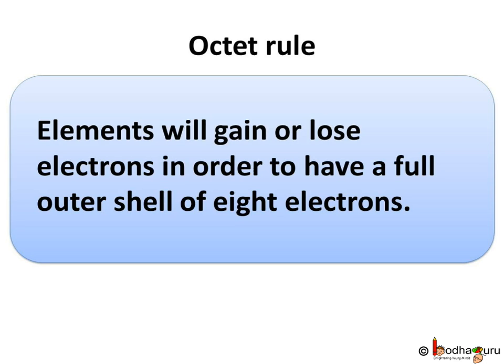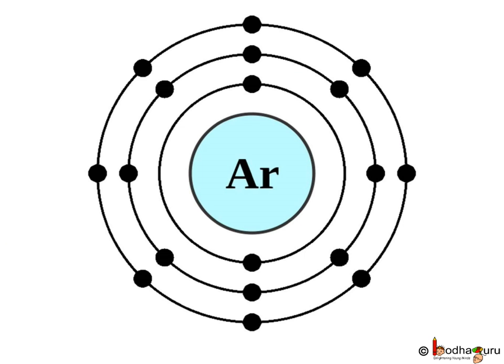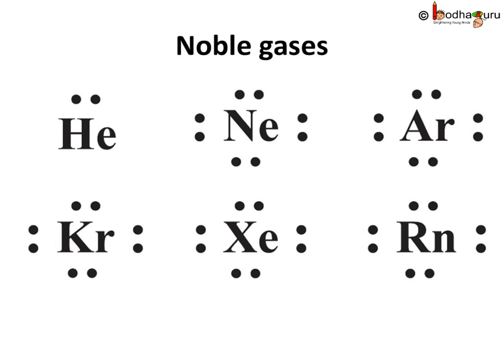Hello everyone. We know that elements generally try to achieve 8 valence electrons as stated in the octet rule. More precisely, elements try to achieve the electron configuration of the noble gas nearest to them in the periodic table. Hence, lithium tries to achieve 2 valence electrons like the helium atom. So, except for a few elements very close to helium, other elements try to achieve 8 valence electrons.